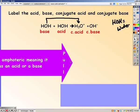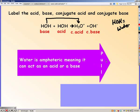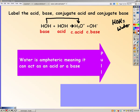So HOH or water is amphoteric, meaning that it can act as an acid or a base. It can lose a hydrogen and be an acid or it can gain a hydrogen and be a base.